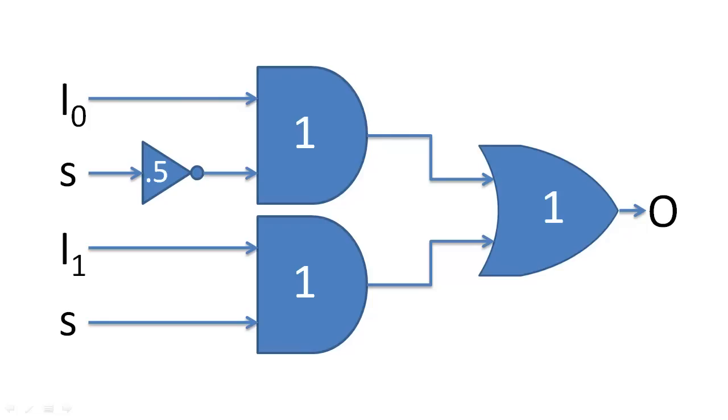We can determine the propagation delay of a change in an input by tracing the path of the signal from input to output. For example, this top path of propagation for S is 2.5 ns.